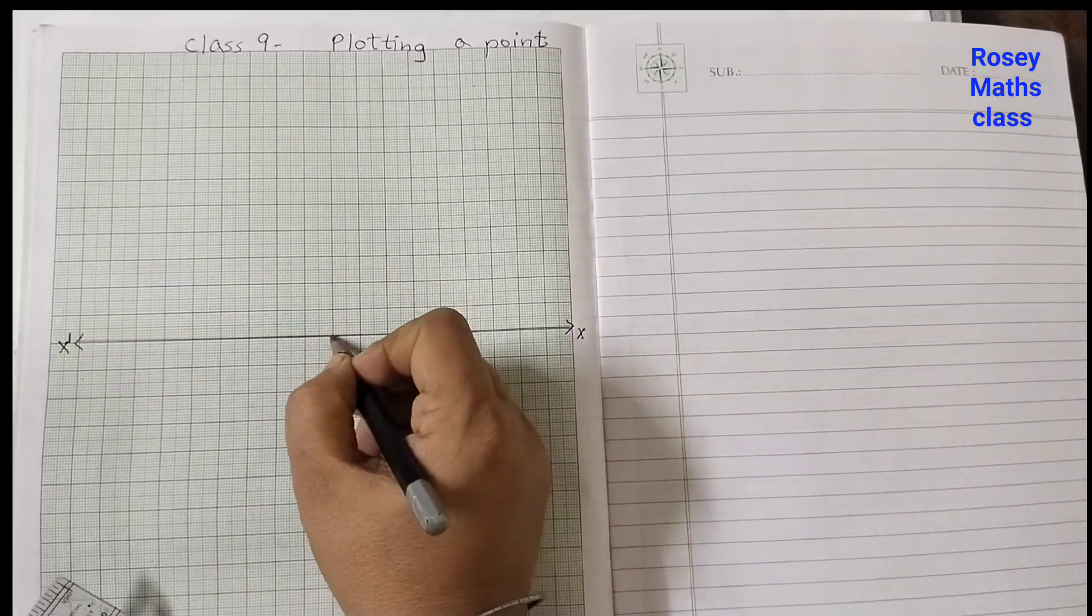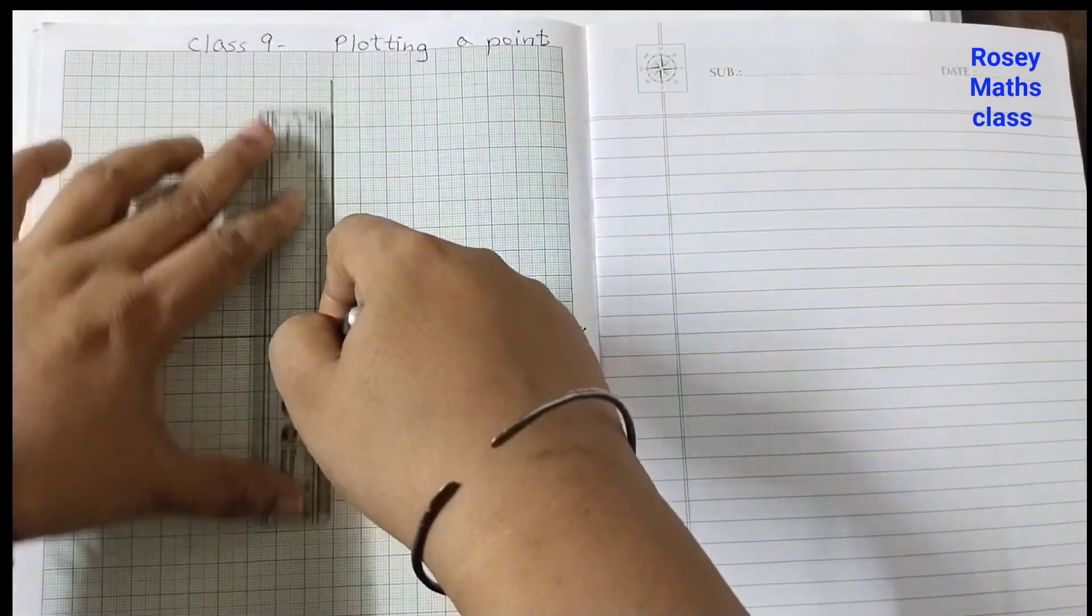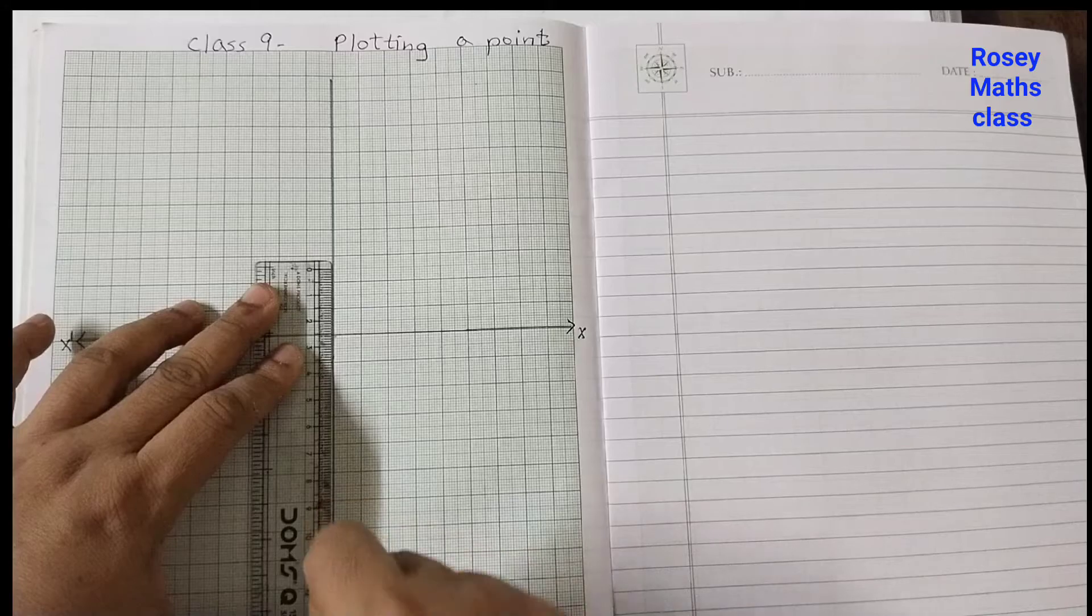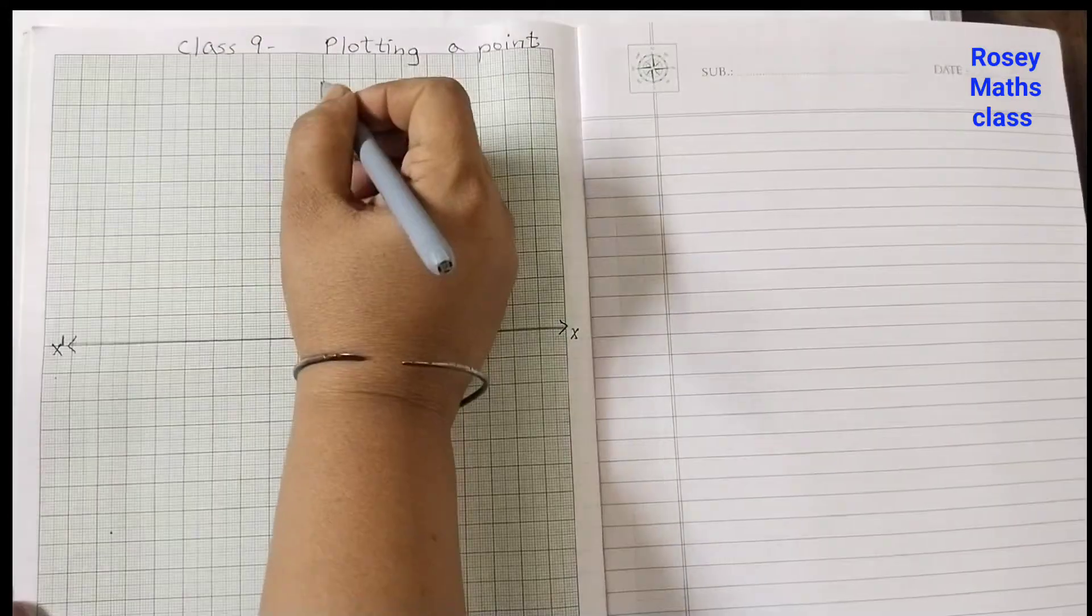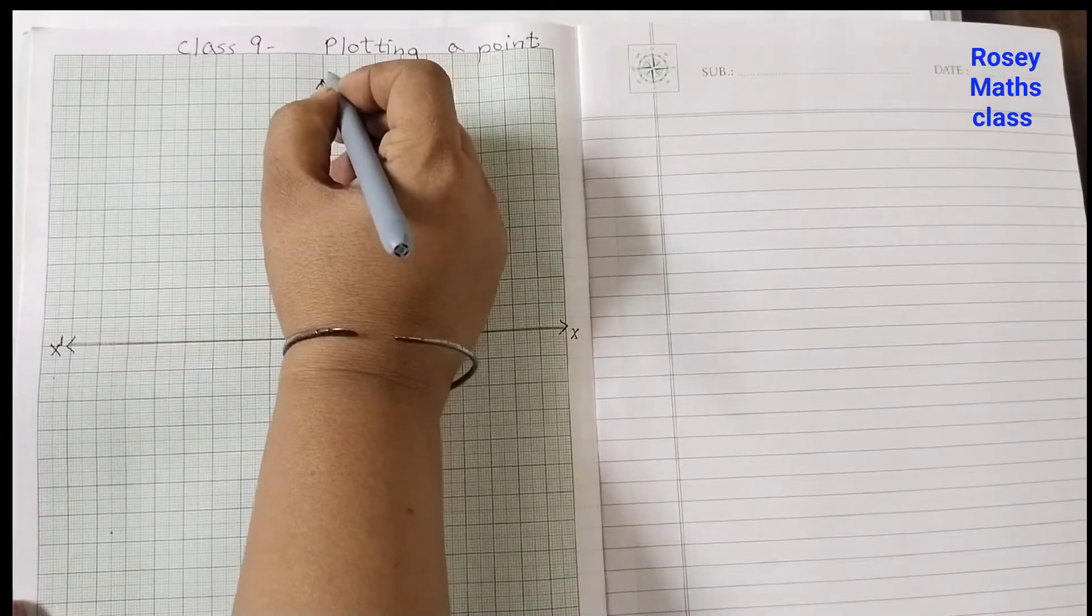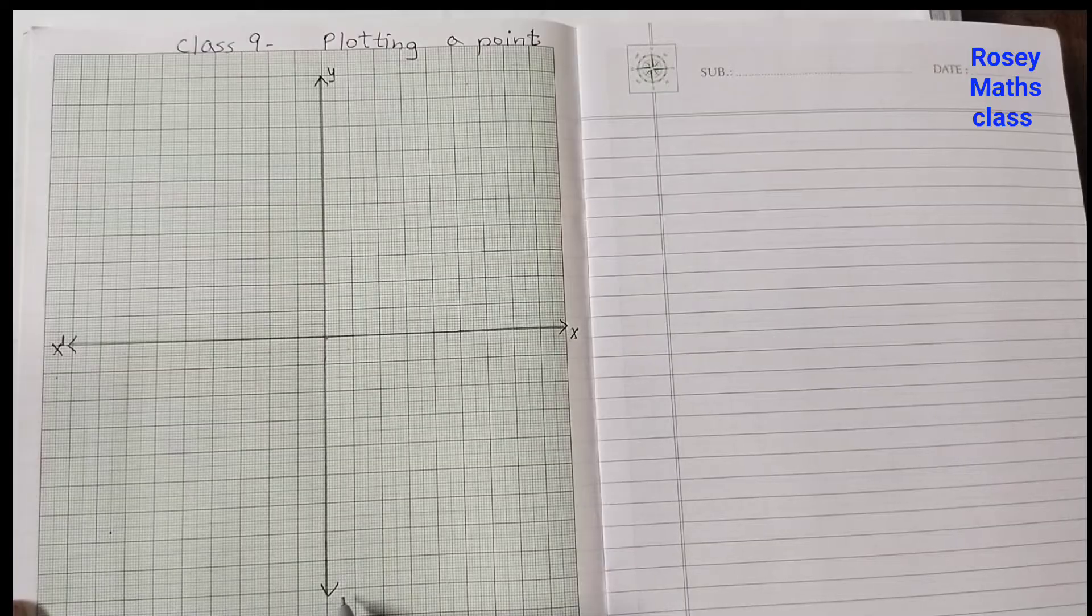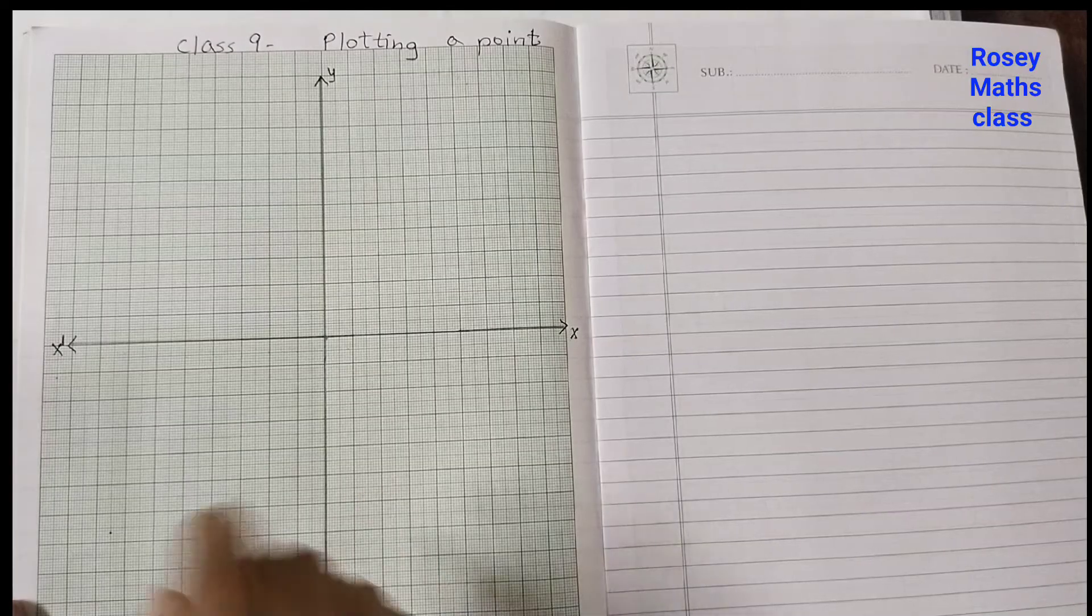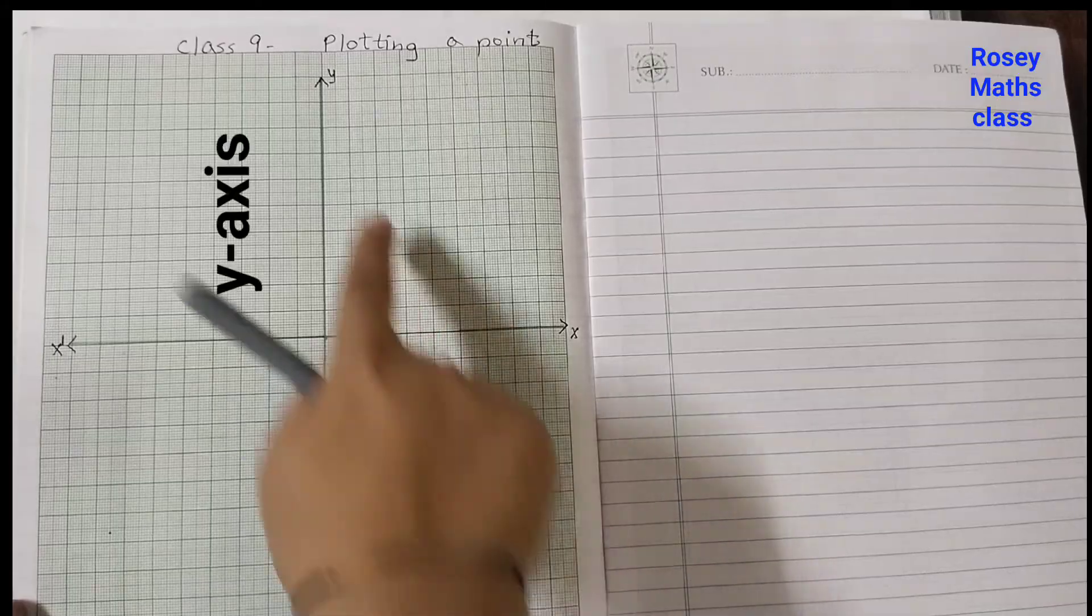Draw a vertical line. Put an arrow mark here, this is your Y, and this side is your Y dash. So this is your horizontal line, this is the vertical line, X axis, Y axis.